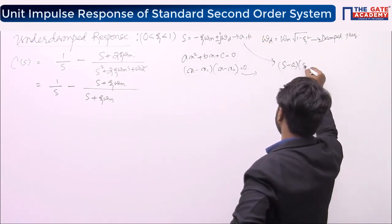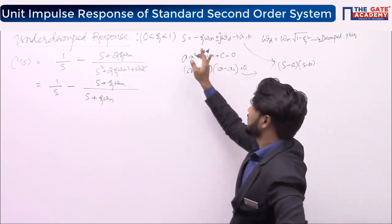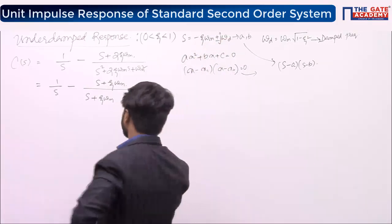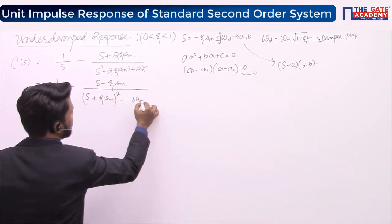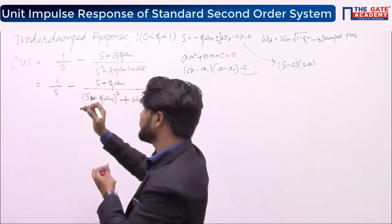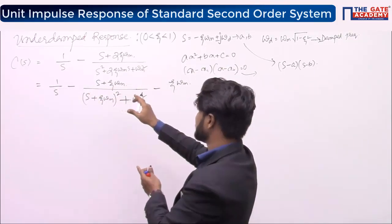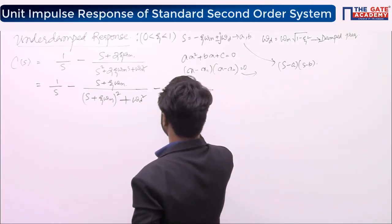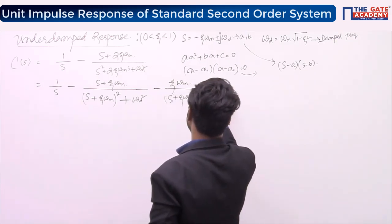So (s − (−ζωn + jωd))(s − (−ζωn − jωd)). If you multiply these two factors, you get (s + ζωn)² + ωd². I can split 2ζωn as ζωn + ζωn, so −2ζωn splits into −ζωn − ζωn, giving (s + ζωn)² + ωd².